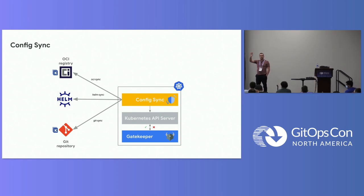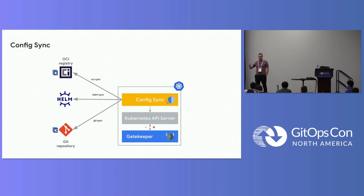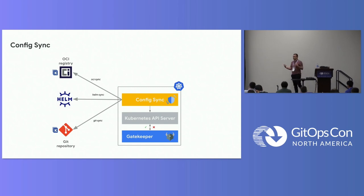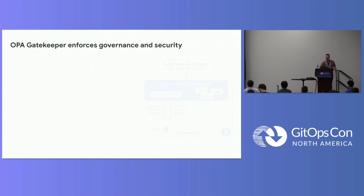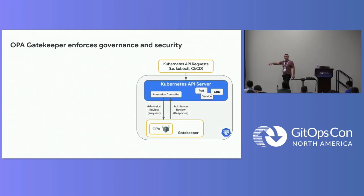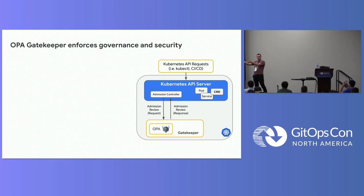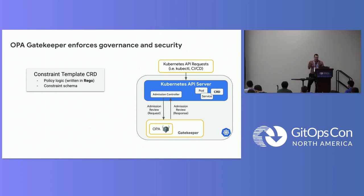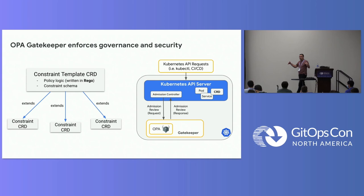Here we will illustrate Gatekeeper — it's not part of the product, it's another CNCF project based on OPA. You can add more security and policies to make sure your manifests respect conformance, compliance, and security. It's an admission controller in Kubernetes where you can have rules denying or accepting any request to the Kubernetes API server. It's typically a constraint template with an OPA Rego schema, and you implement constraints to extend it.